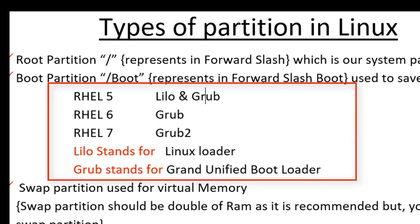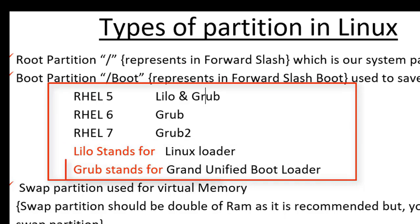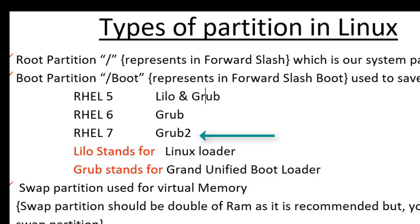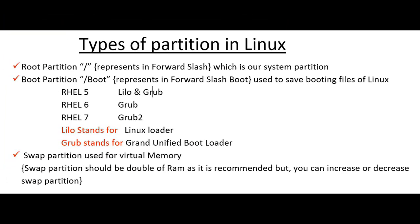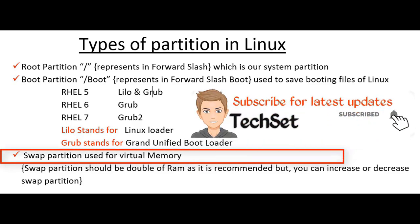In RHEL 5, that means Red Hat 5, we use Lilo and Grub as booting files of Linux. Lilo stands for Linux Loader and Grub stands for Grand Unified Boot Loader. RHEL 6 uses Grub, and RHEL 7 uses Grub 2 as its booting file. Our third partition is the swap partition, which is especially used for virtual memory.